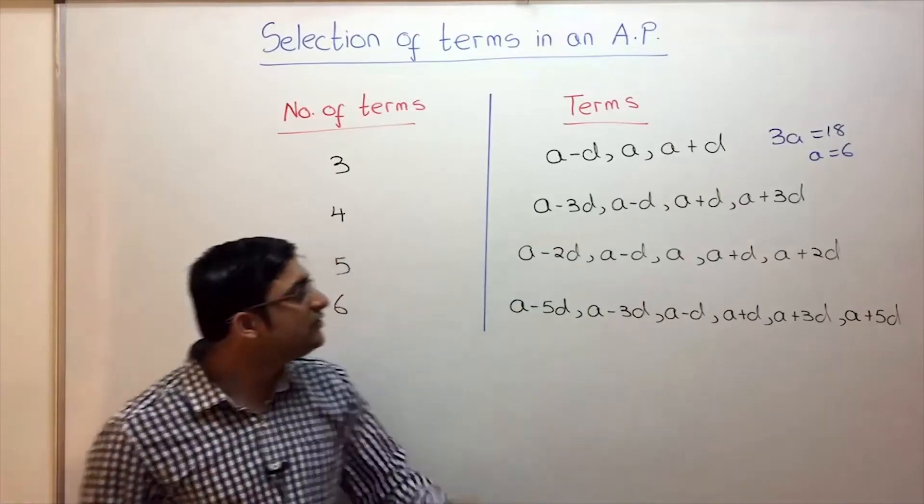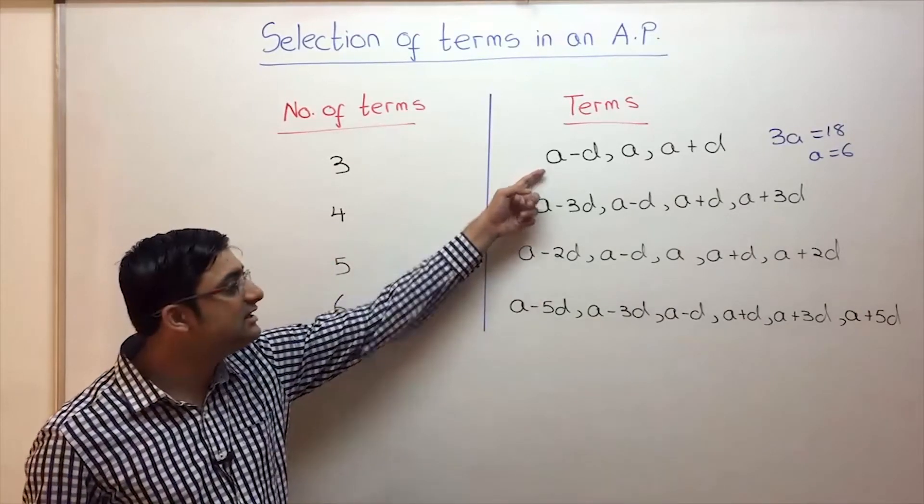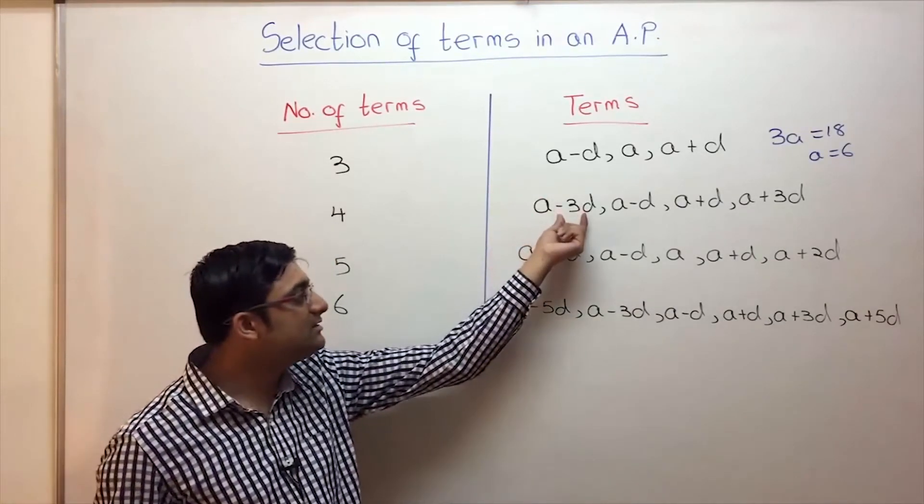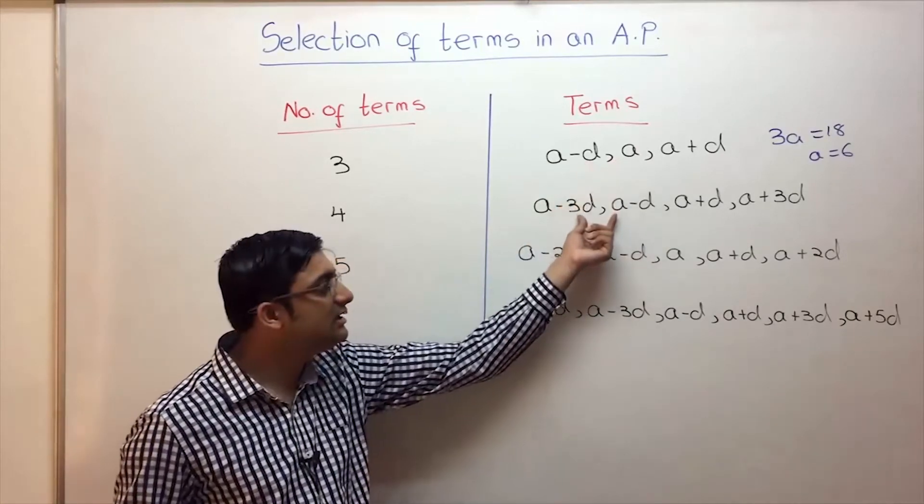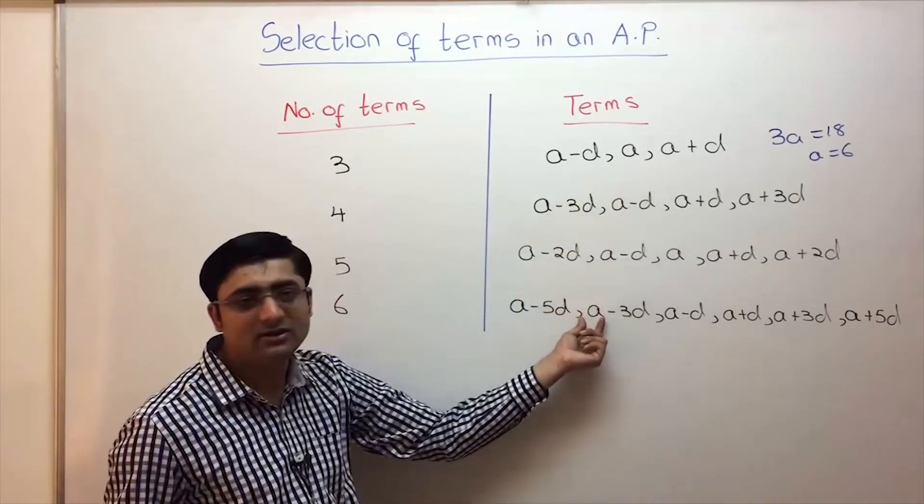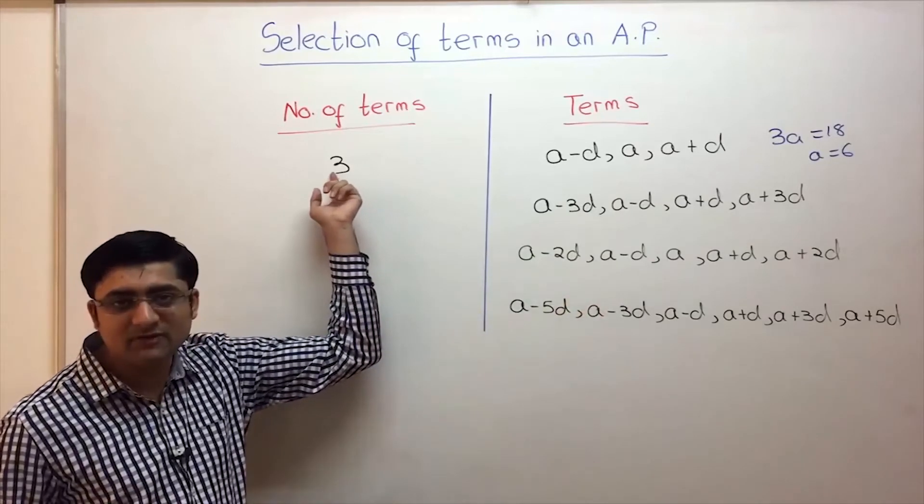Also if you notice, here the common difference is D, here 2D. See, minus 3D and then minus D, so here common difference is D. Here 2D, here D, here 2D. So whenever we have odd number of terms common difference is D, for even it is 2D.